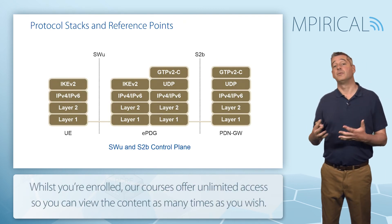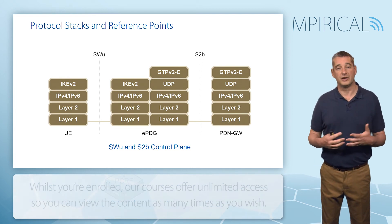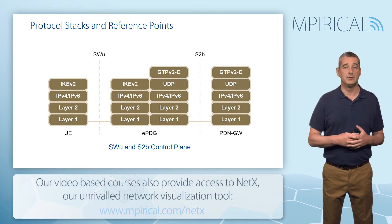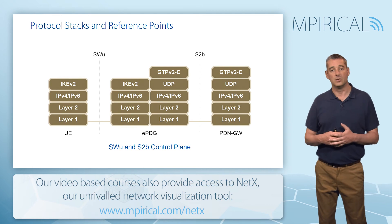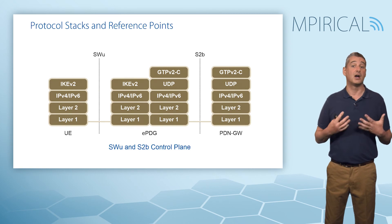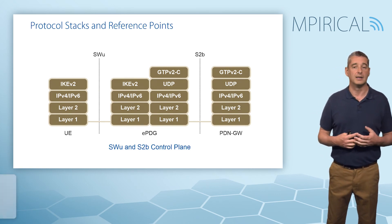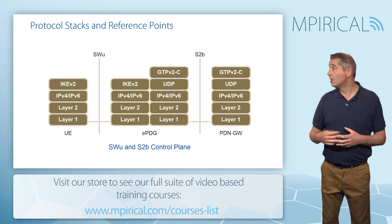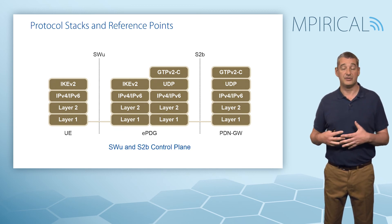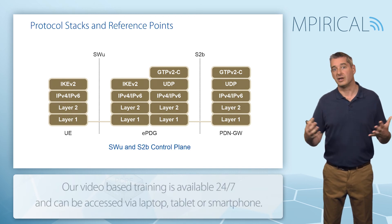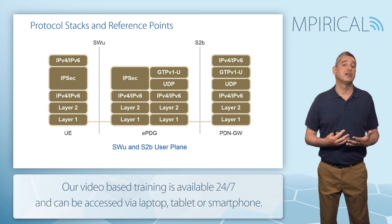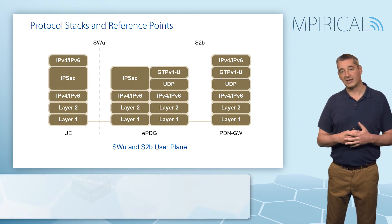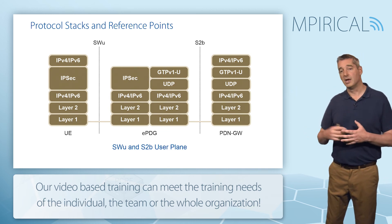The final thing to look at are the protocol stacks and reference points operating across our untrusted non-3GPP network. Starting with the control plane: across the SWU interface we have IKEv2, the Internet Key Exchange Version 2, used to set up security associations between the mobile and the ePDG. Across the S2B interface, between the Evolved Packet Data Gateway and the PDN Gateway, we use GTPv2c — the control protocol used to set up GTP tunnels across the S2B. On the user plane, traffic is tunneled across the SWU interface within the IPSec tunnel, while over the S2B we use GTP in its user plane variant.